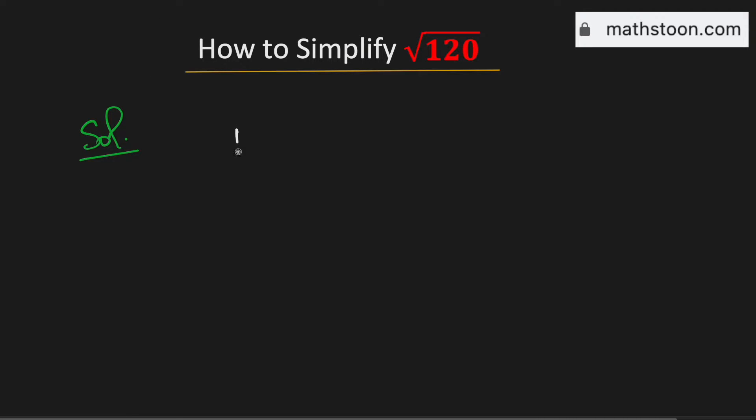At first we will write 120 as a product of two numbers. At least one of them will be a perfect square.